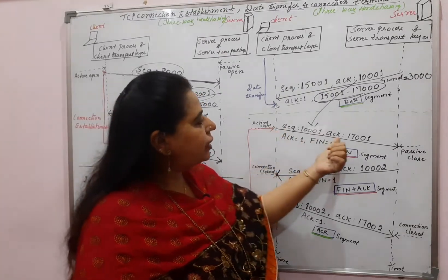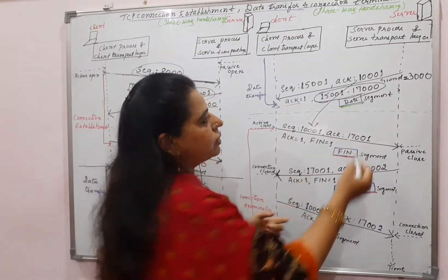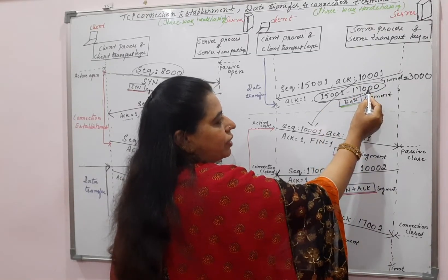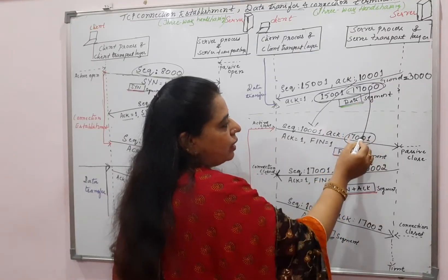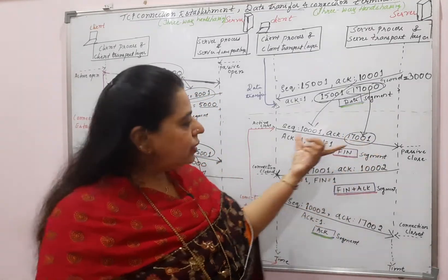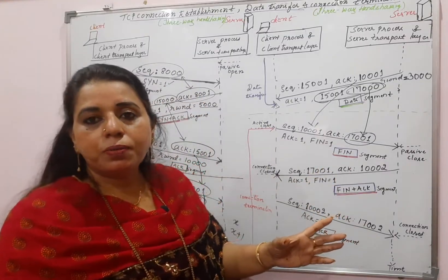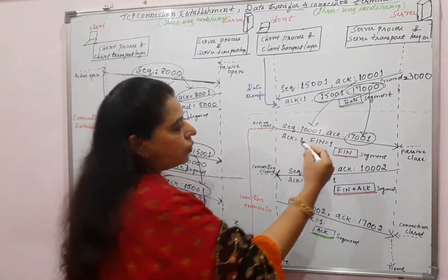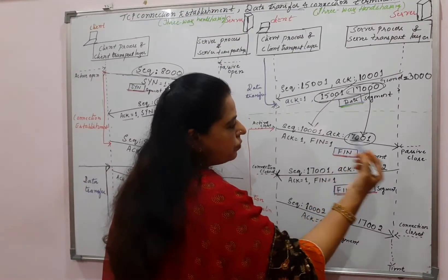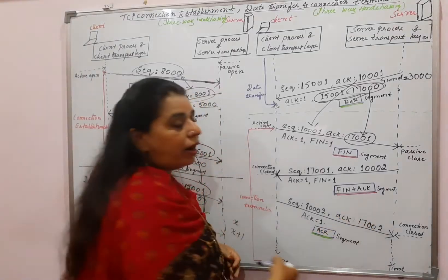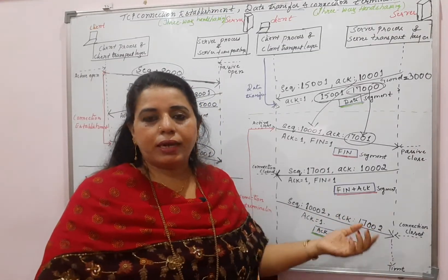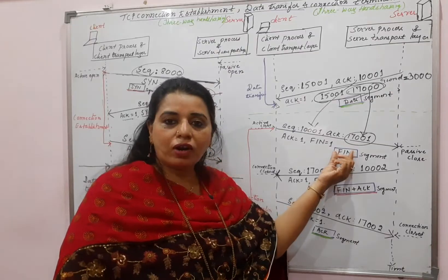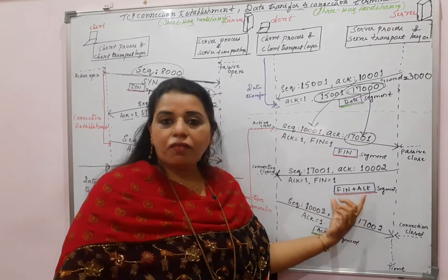This will be clear because the server has sent up till byte number 17000. It started from 15001 and ended at 17000. So the acknowledgement will be one plus the last byte received, which is 17001. This is the FIN segment. To give a response to this FIN segment, the server will respond with an acknowledgement. The server will also say it is going to close the connection, so it has to set the FIN flag and acknowledge the client's FIN. That is why we call this the FIN plus ACK segment.